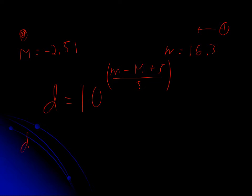In this case, d = 10^((16.3-(-2.51)+5)/5). You have to be careful how you enter this in the calculator. You need parentheses around the numerator. If you don't, instead of having everything in the numerator divide by 5, you just have 5 over 5.